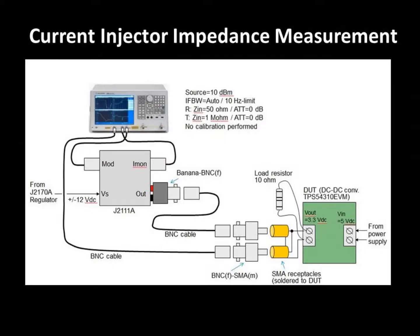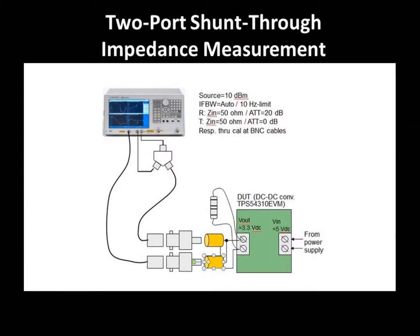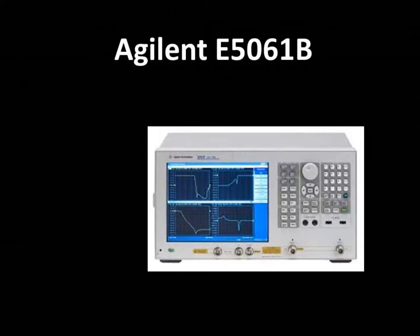Agilent used the test setup shown here, which includes PicoTest's J2111A current injector, to measure the output impedance of a DC-to-DC converter evaluation module. Agilent also measured the output impedance of the same DC-to-DC converter EVM using the two-port shunt-through configuration shown here. In both cases, the VNA being used was the Agilent E5061B.